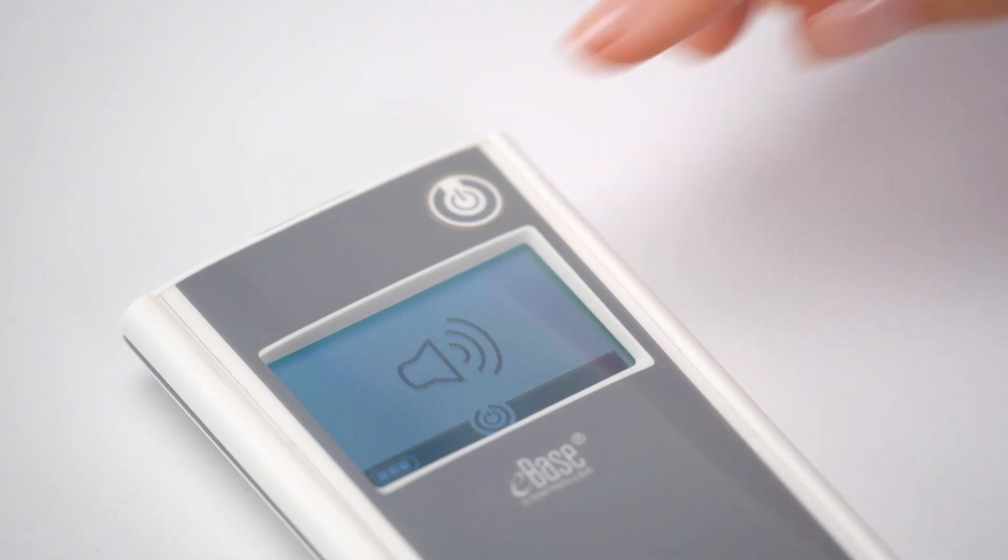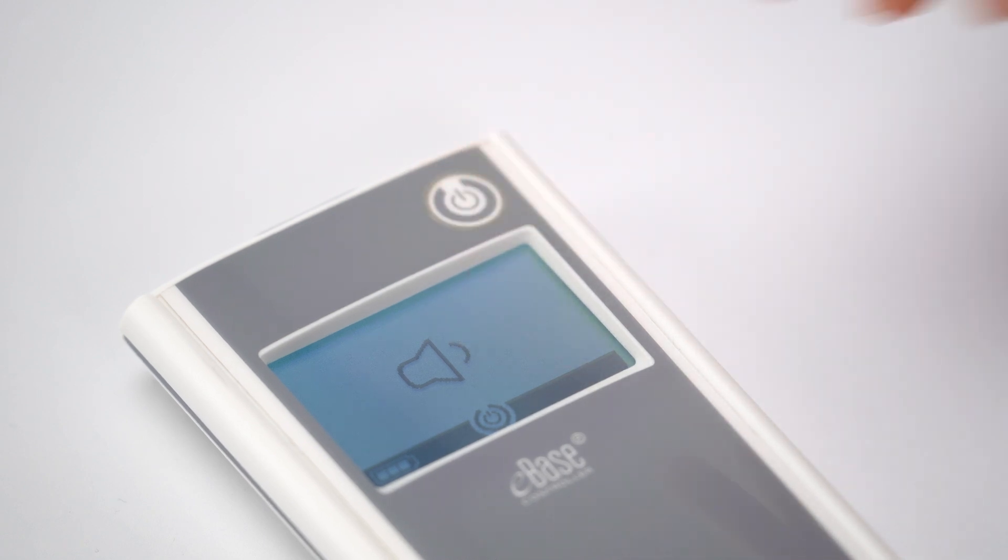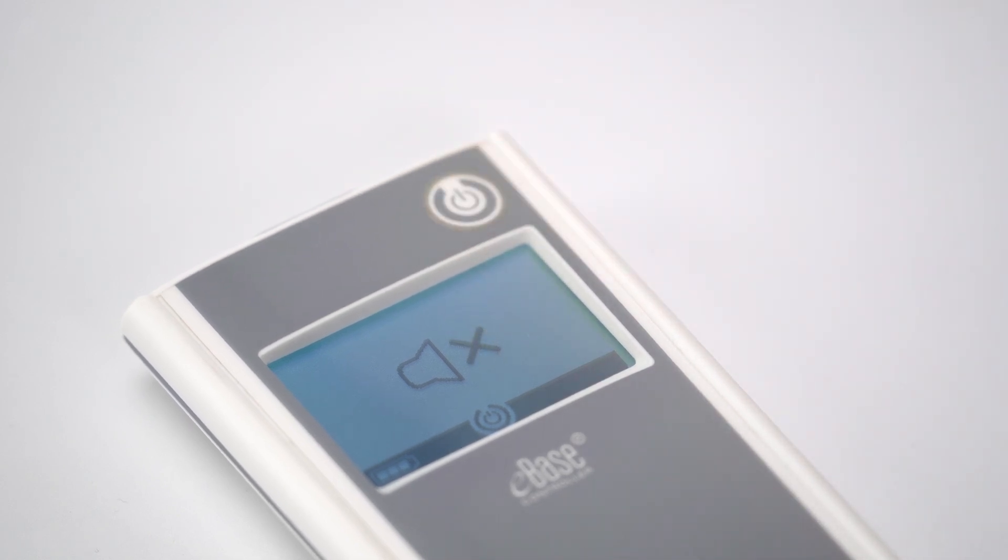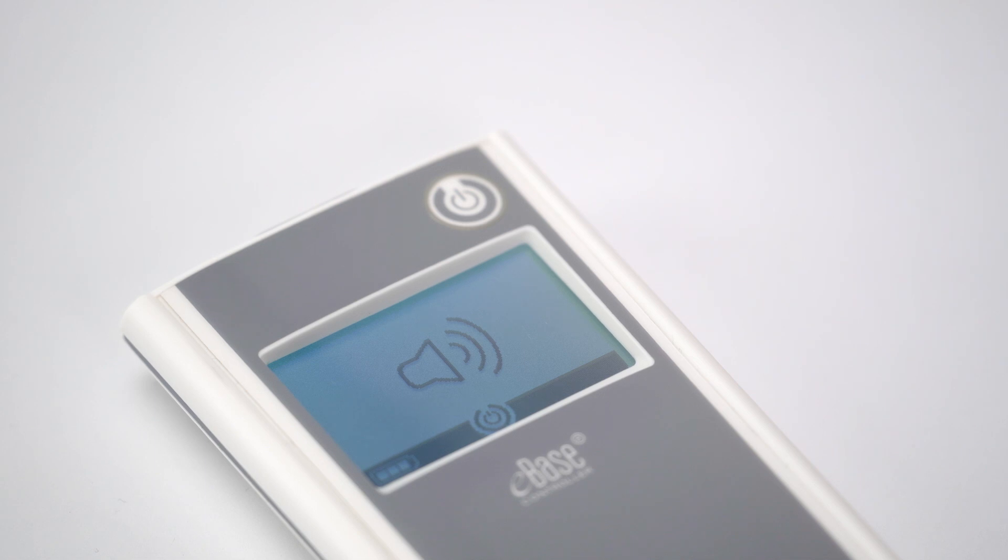In the first step you can change the volume of the beeps. By repeatedly pressing the on-off button, choose between the option default with two beeps as acoustic status feedback, and the options all signal tones off, and reduced signal tones with one single beep. The controller automatically saves the selection after a few seconds.